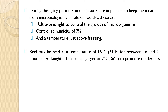During the aging period, some measures are important to keep the meat microbiologically safe and prevent it from drying out. These include ultraviolet light to control the growth of microorganisms, controlled humidity of 70%, and a temperature just above freezing. Beef may be held at a temperature of 16 degrees Celsius for between 16 and 20 hours after slaughter before being aged at 2 degrees Celsius to promote tenderness.